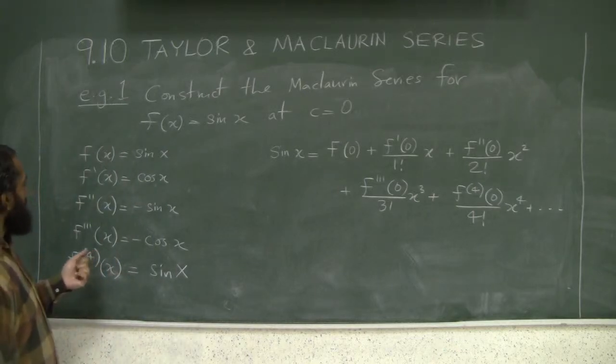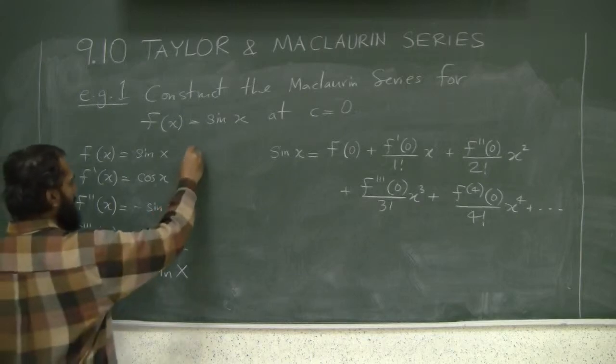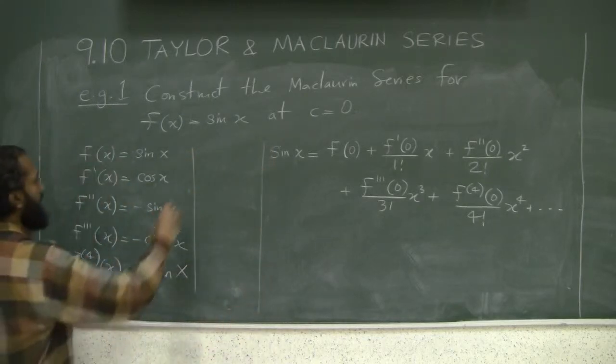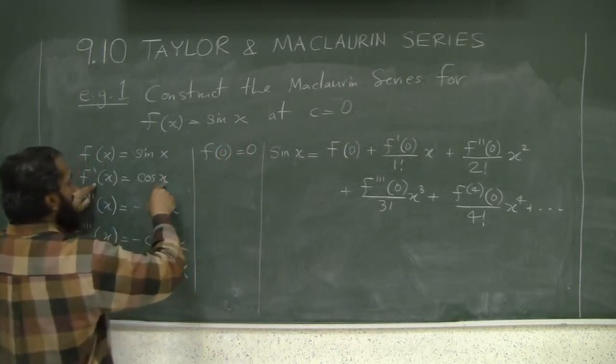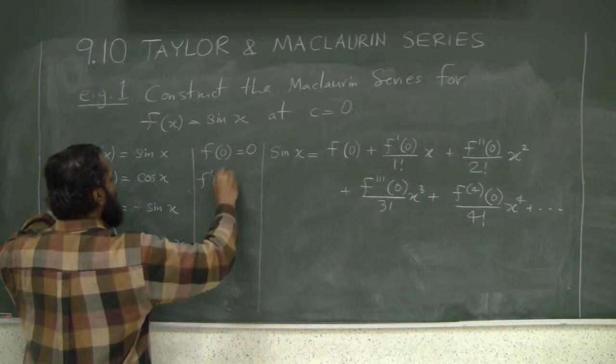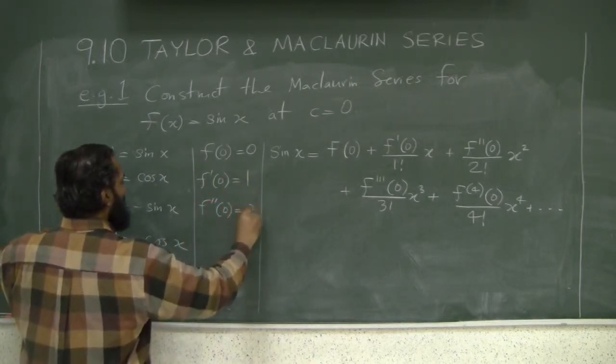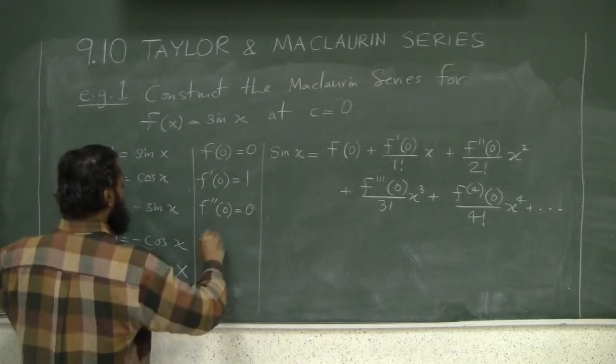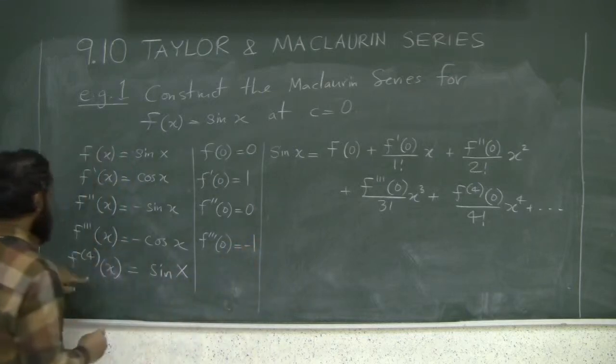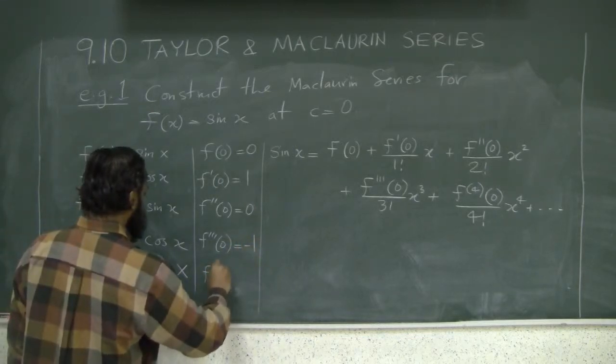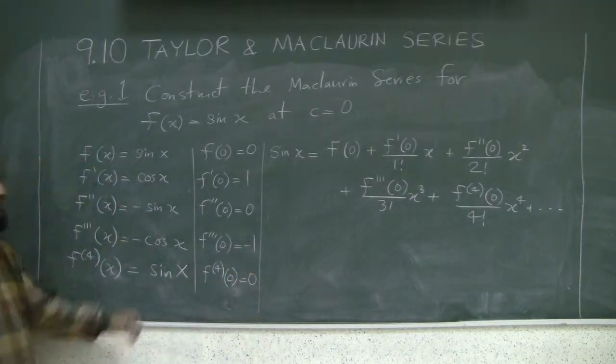Let's write down the values. f(0) is zero. f'(0), which is cos(0), is one. The second derivative at zero is zero. The third derivative at zero is negative one. The fourth derivative at zero is zero, and we continue this way.